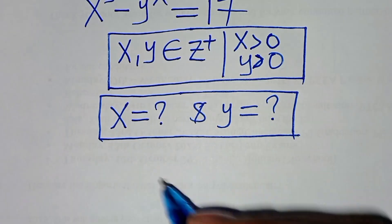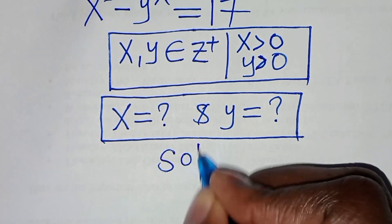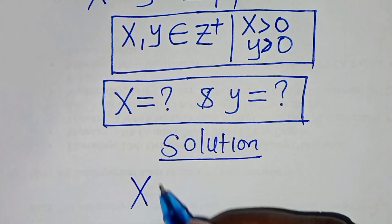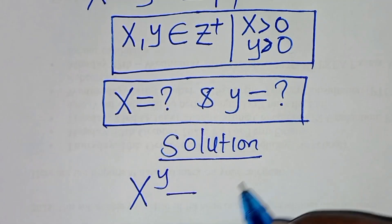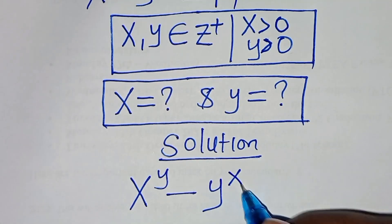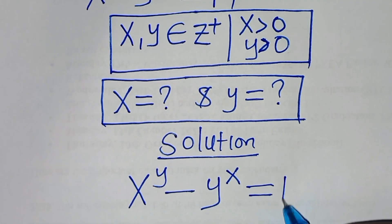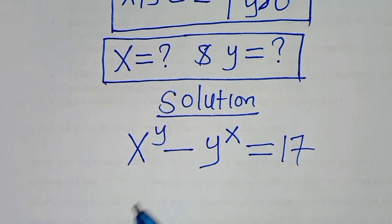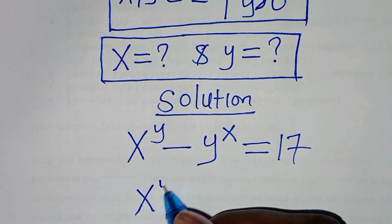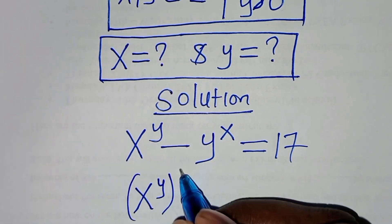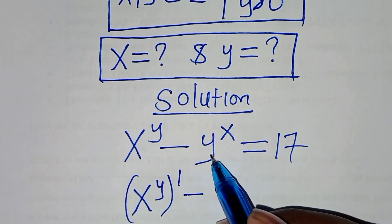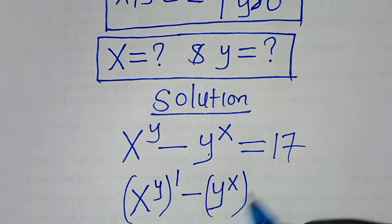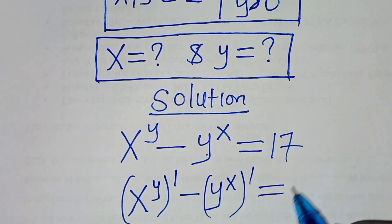Let's present a solution from here. We have x to the power of y minus y to the power of x, this is equal to 17. We can express x to the power of y as x to the power of y raised to the power of 1, minus y to the power of x raised to the power of 1. This is equal to 17.